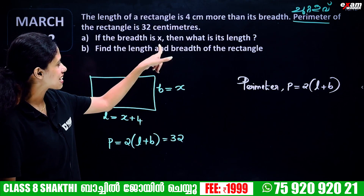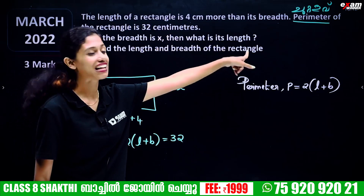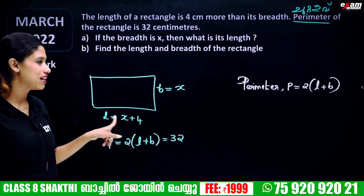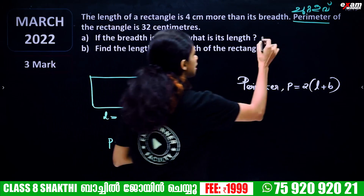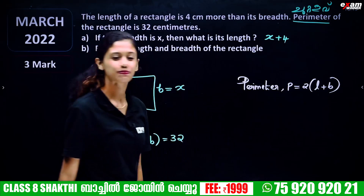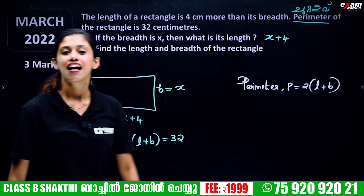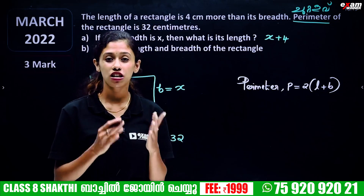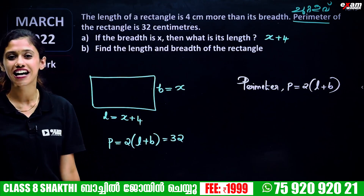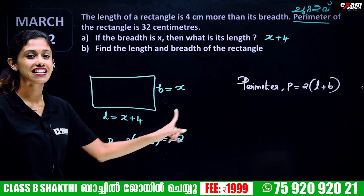If the breadth is x, then the length is x plus 4. So we substitute: length is x plus 4, breadth is x. The question is: find the length and breadth of the rectangle.